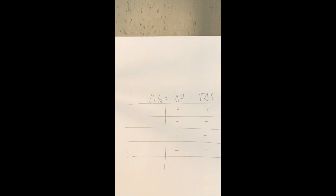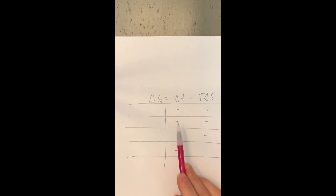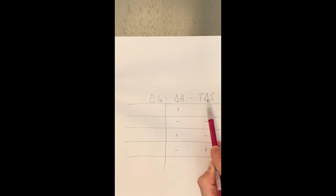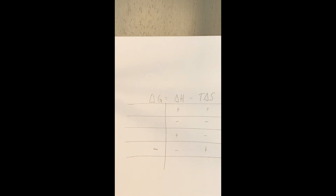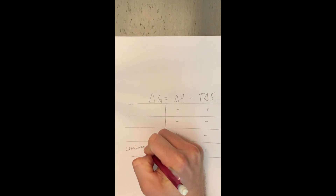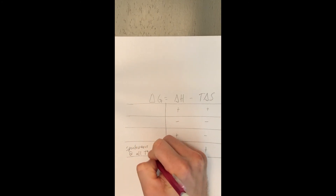Looking at this formula, I've listed out all the possible combinations of signs for delta H and delta S. I'm going to start with the easier ones. If delta H is negative and delta S is positive, delta S is a positive value, so the entropy term is going to be negative. A negative plus a negative means delta G is always going to be negative. And if delta G is negative, it's spontaneous — spontaneous at all temperatures, because a negative plus a negative is always a negative value.